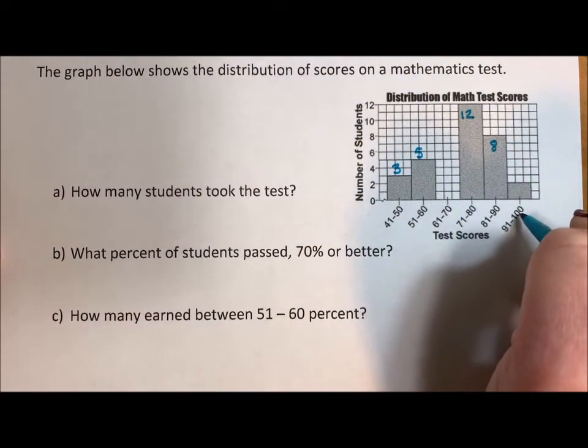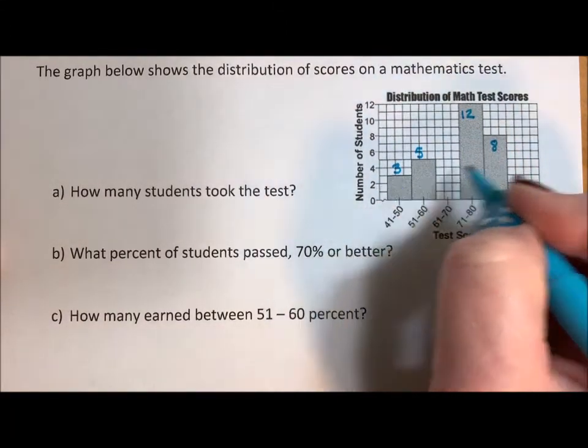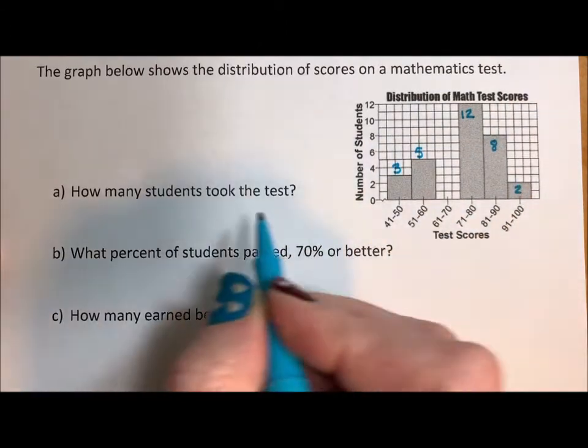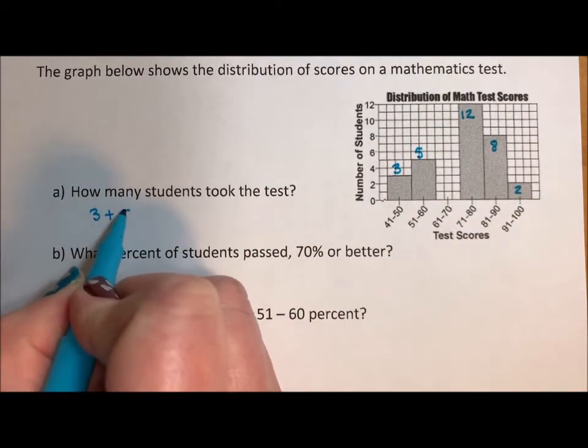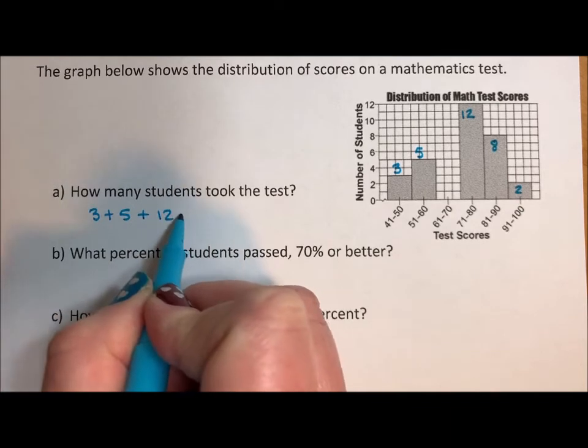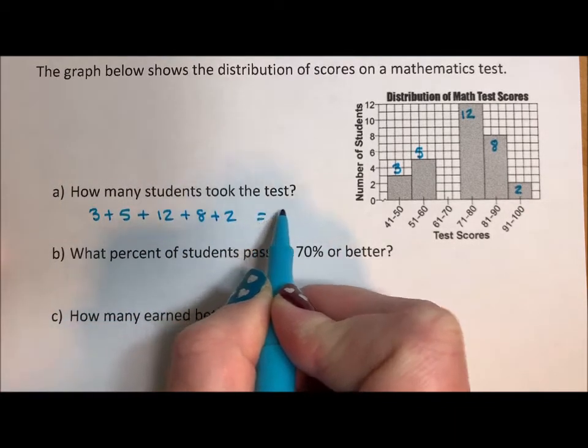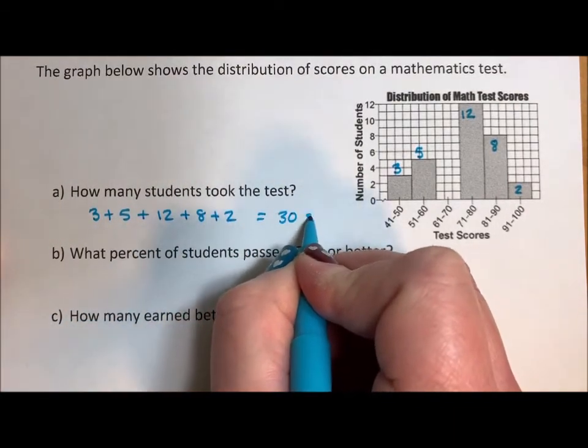And 91 to 100, we have two. So three plus five plus 12 plus eight plus two is 30 students.